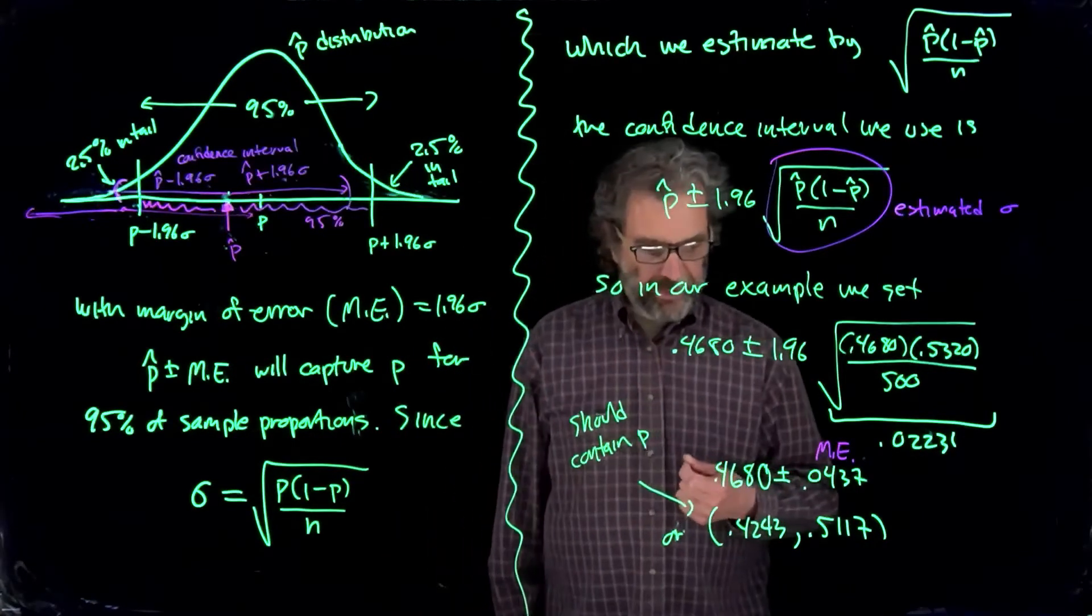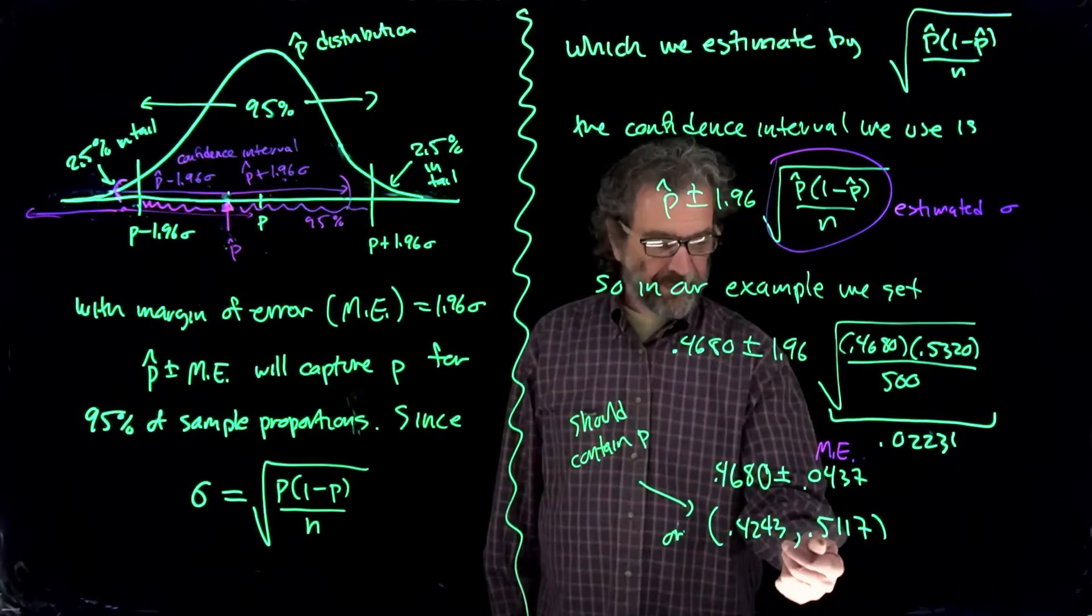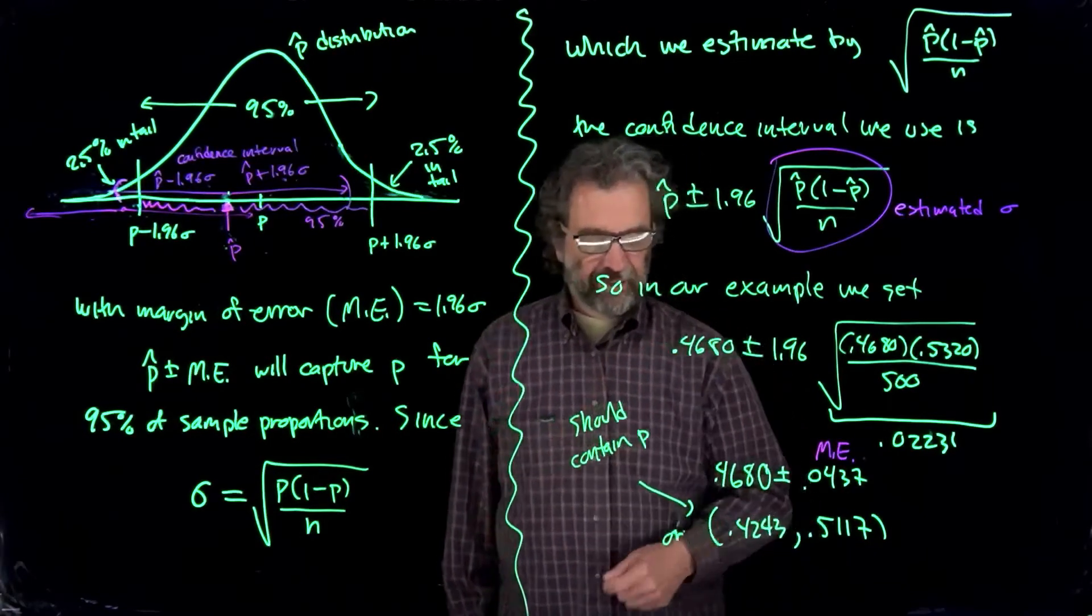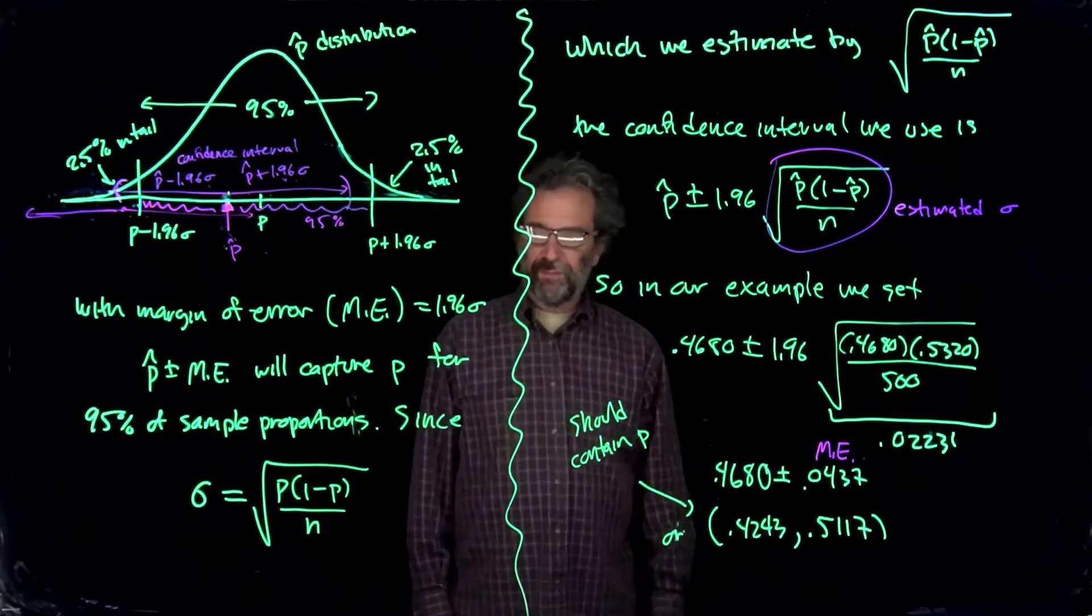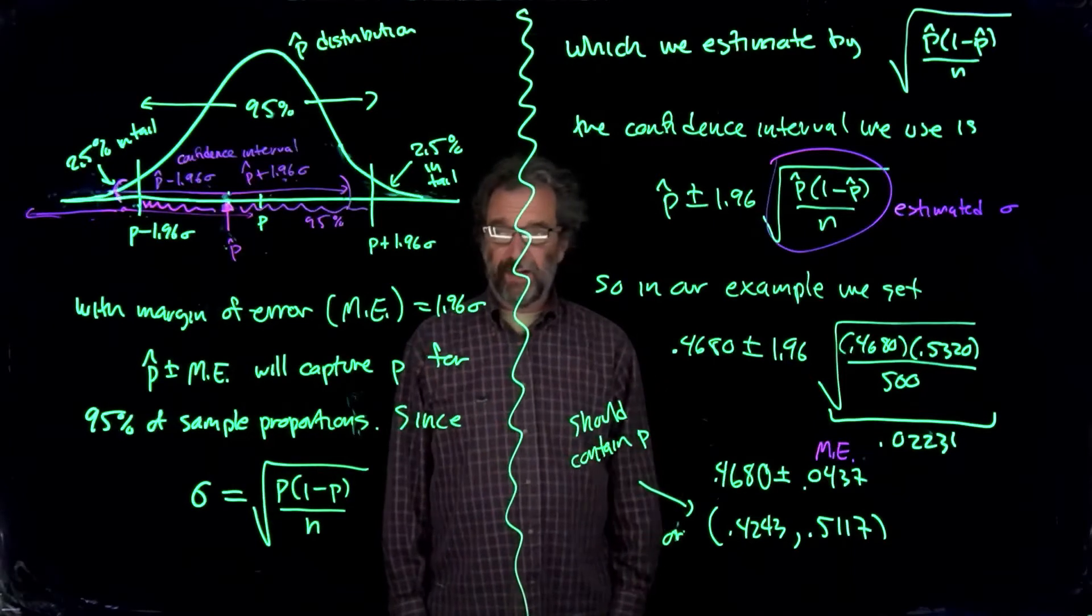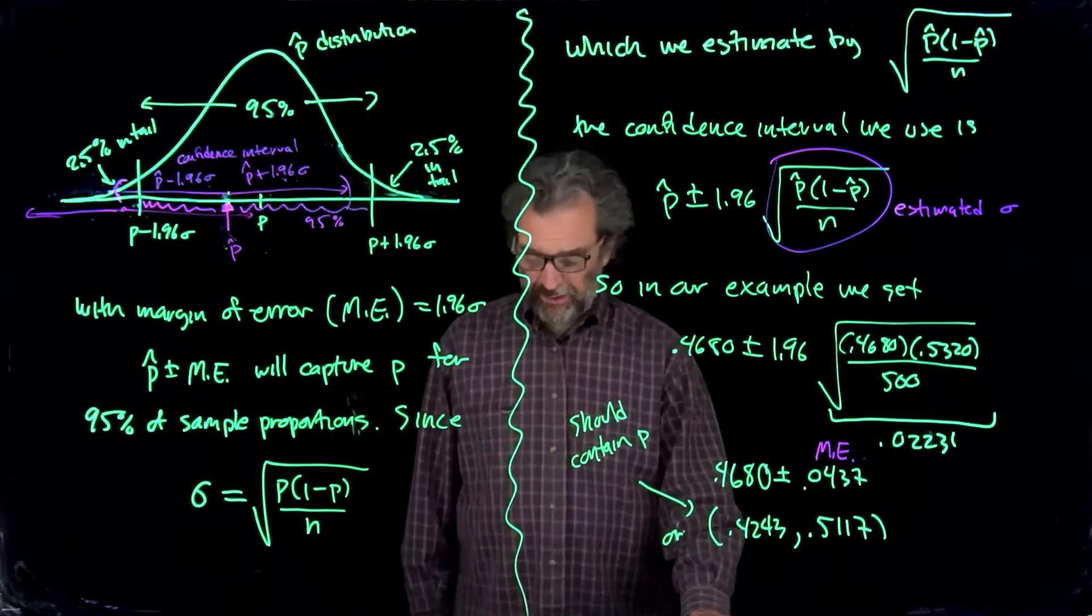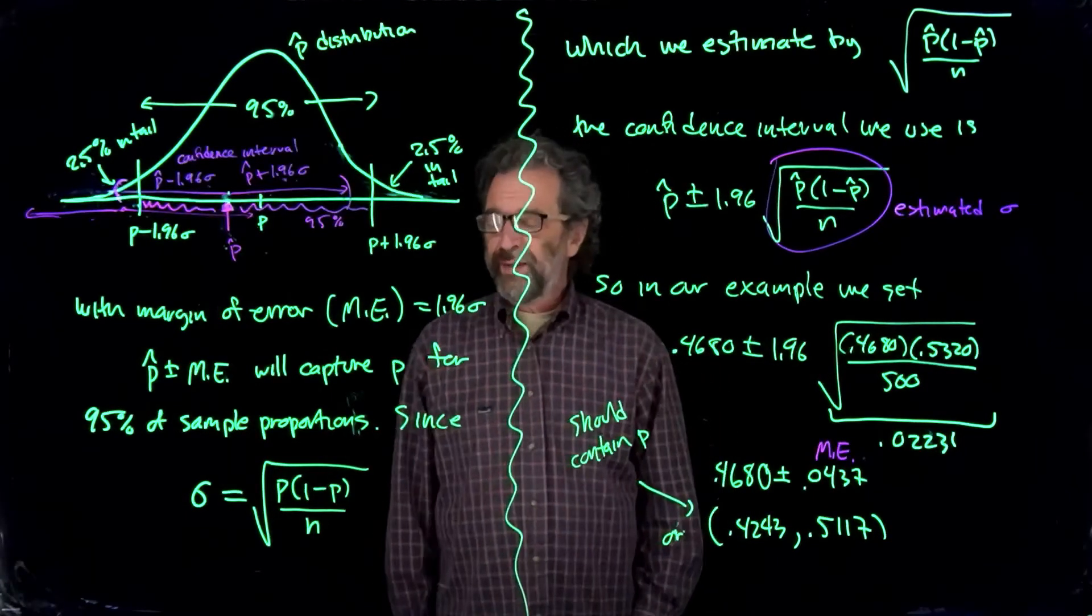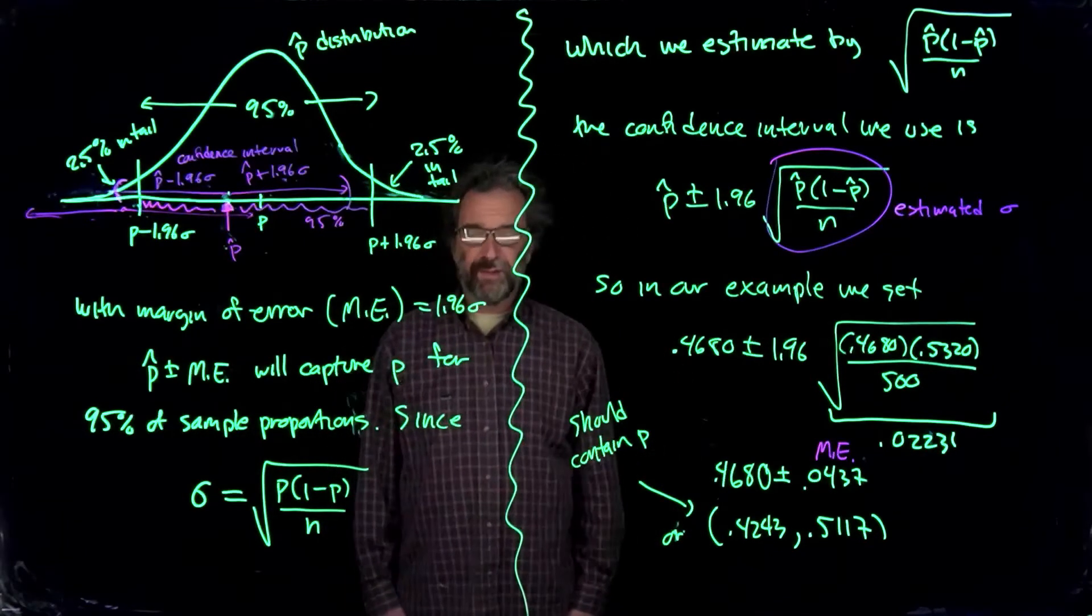And so it looks like we can't tell because the true proportion might be bigger than 50%, because the top end of this is 51%. Or it might be less than 50% because the bottom end of this is less than 50%. So there's a possibility it would pass if it went to the country to vote on. There's also a possibility it wouldn't pass. So we don't have enough information because the sample size is too small for us to make a decision about whether we think the ballot measure would pass based on the data collected from only 500 people.